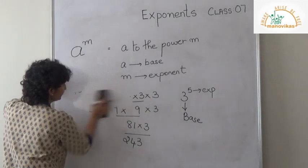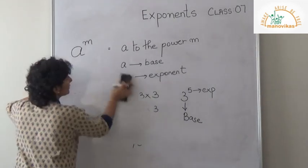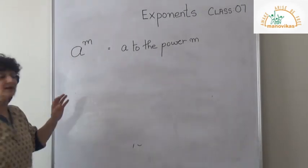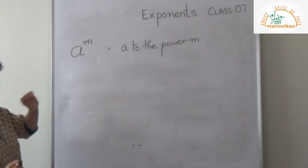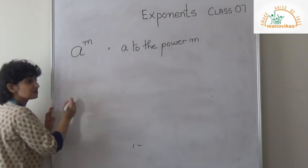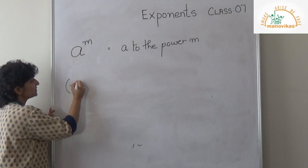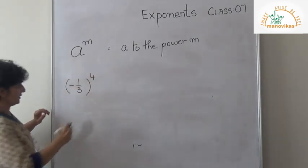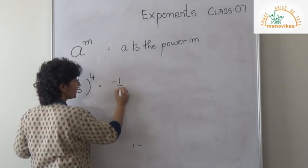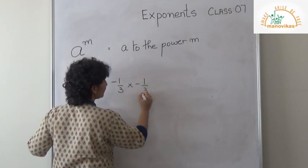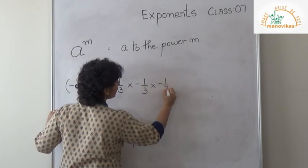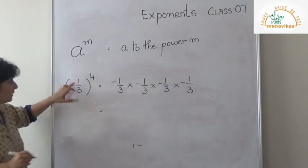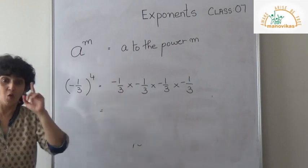Now let's go to the next example. I did a simple whole number; now let's do a fraction. Suppose if I have minus 1 upon 3 to the power 4. The same way: minus 1 upon 3, multiplied 4 times.